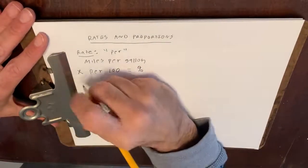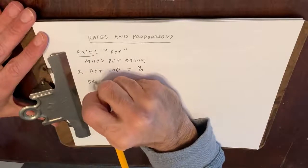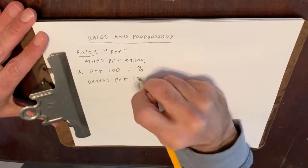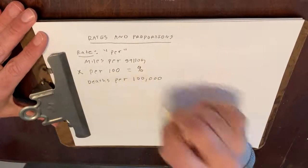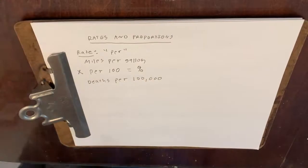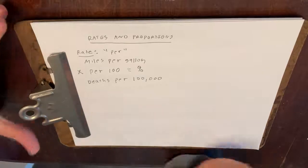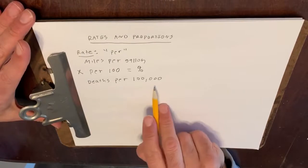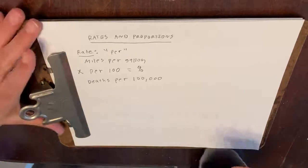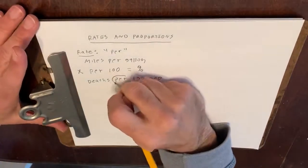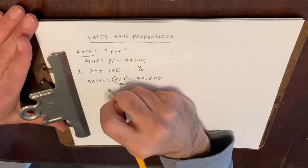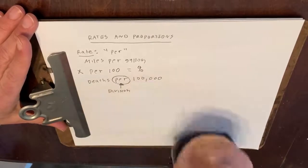Death rates are often expressed as the number of deaths per 100,000. That's a common way to express death rates — deaths per 100,000 people. So a death rate would be the number of deaths per 100,000 people exposed. The word 'per' means that the operation of division is used.